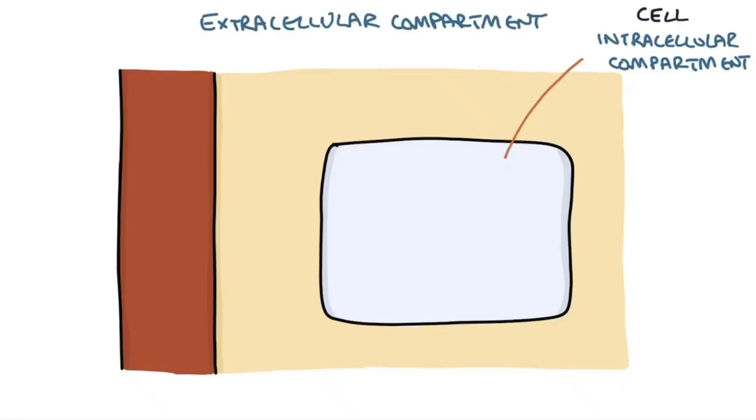Think of the fluid spaces in the body. You have the fluid inside the cells, called the intracellular compartment. Next you have the fluid outside the cells, called the extracellular compartment. The extracellular compartment can be broken down into the interstitial compartment, which is the fluid that sits around the cells, and the intravascular compartment, which is the fluid inside the blood vessels.